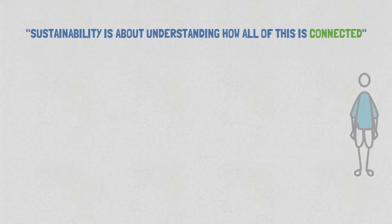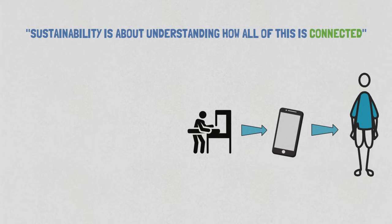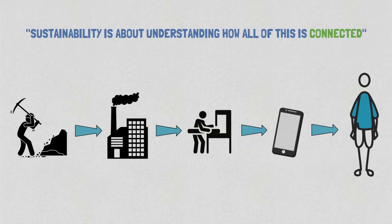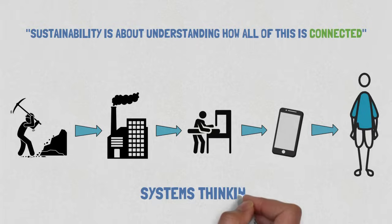So ultimately, sustainability is about understanding how all of this is connected. Understanding that when you make a decision to buy a smartphone, you are impacting someone's life on the other side of the planet who's involved in mining the materials to put in that smartphone. So sustainability is about systems thinking.